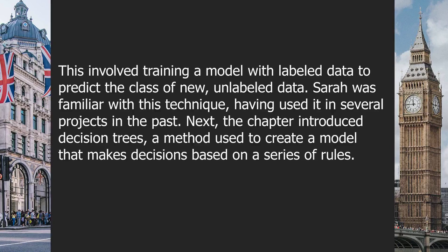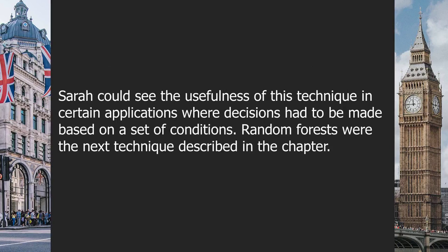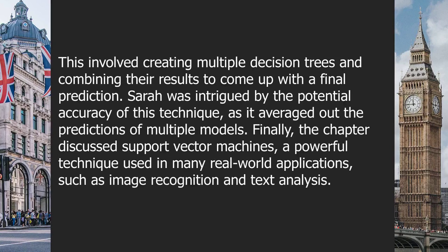Next, the chapter introduced decision trees, a method used to create a model that makes decisions based on a series of rules. Random forests were the next technique described, which involved creating multiple decision trees and combining their results to come up with a final prediction. Sarah was intrigued by the potential accuracy of this technique, as it averaged out the predictions of multiple models.